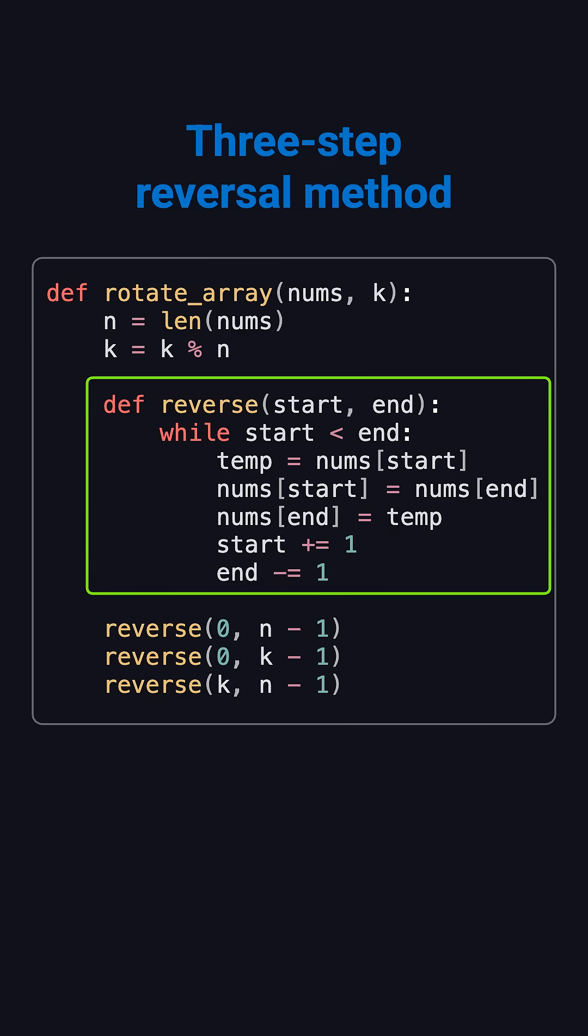Then we define a simple reverse function that uses two pointers to swap elements. After that, we perform three reversals: first the whole array, then the first k elements, and finally the rest.